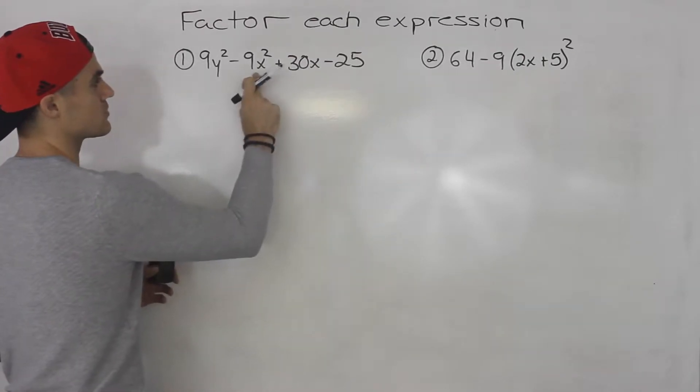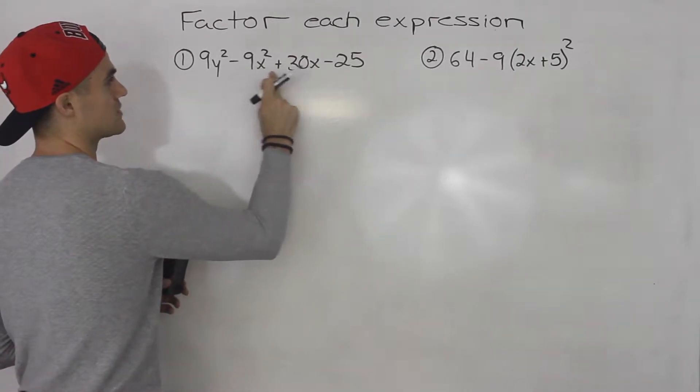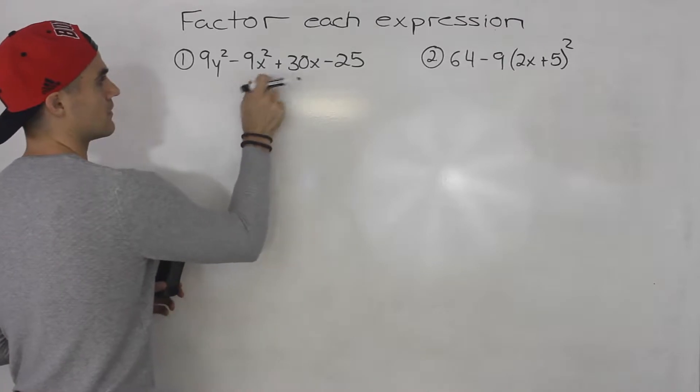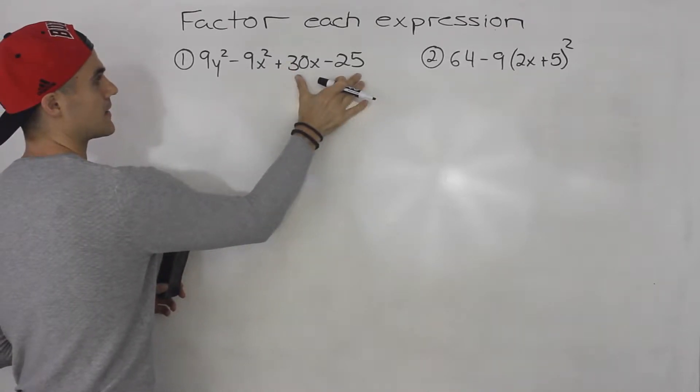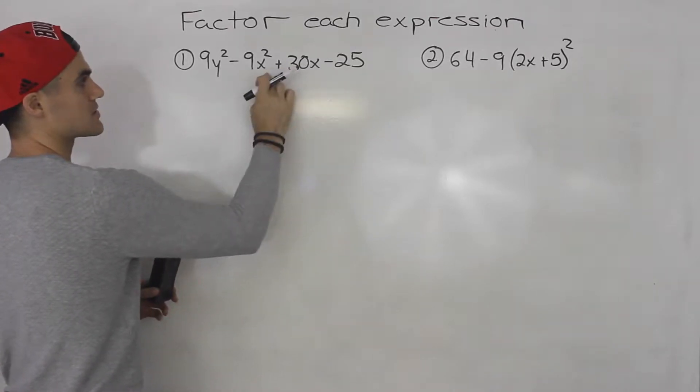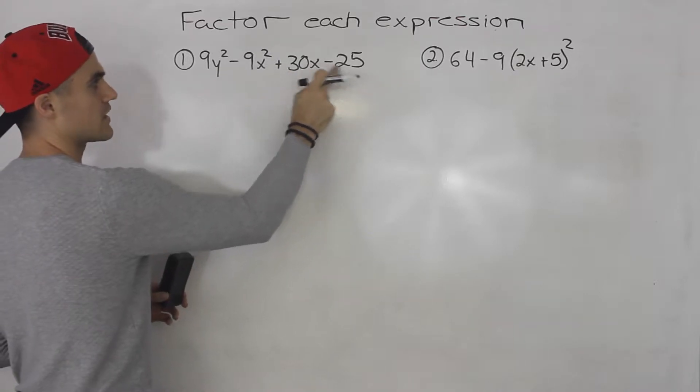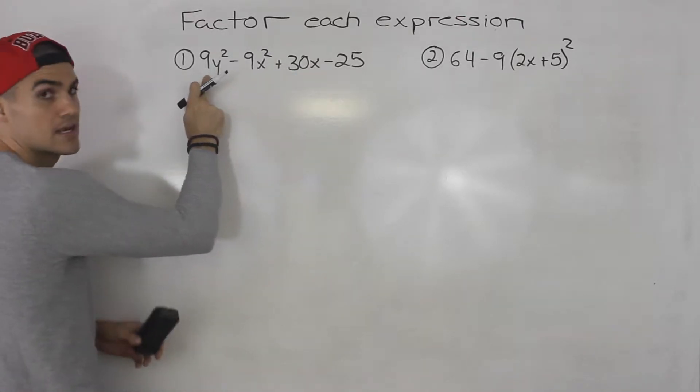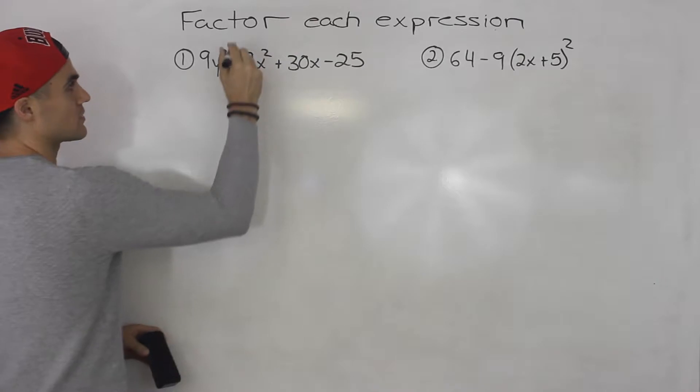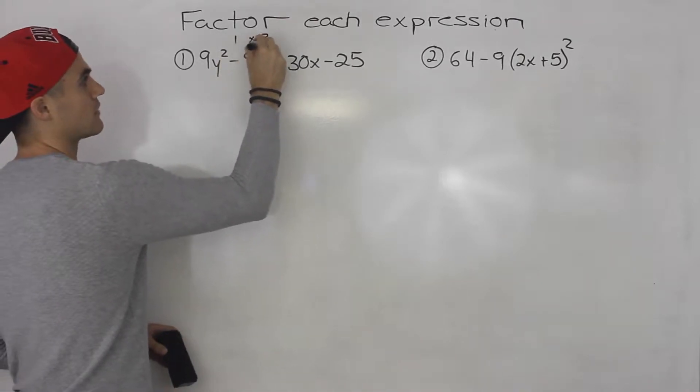But notice that these three factors here, or these three terms here rather, they're sort of like a trinomial: negative 9x² plus 30x minus 25. And then we got this 9y² here. So let's try one by three factoring, which we went over in the lecture videos.